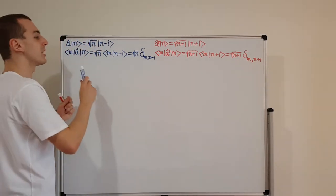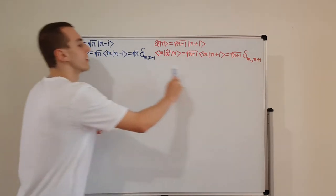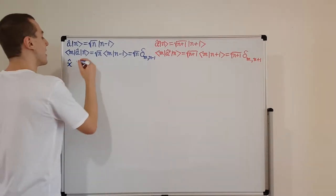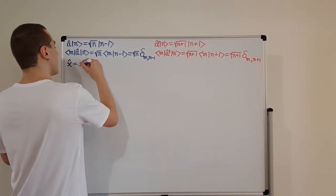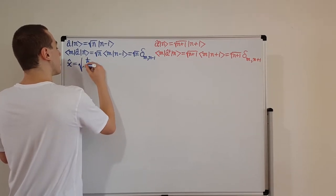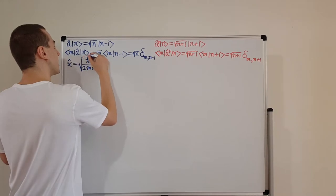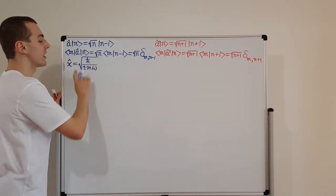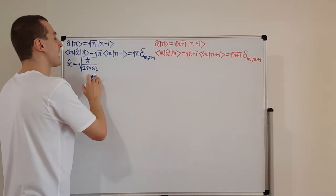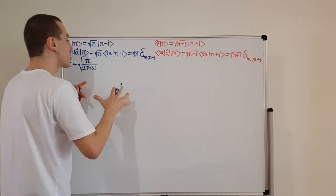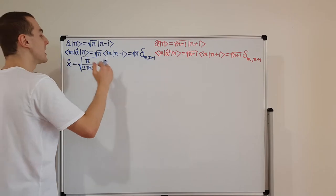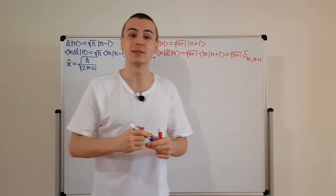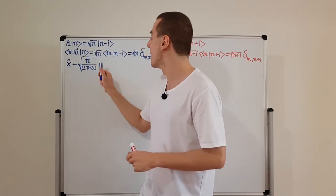Now I'll write down the important relationships we're going to use to construct the position and momentum matrices. The position operator x-hat equals a normalization constant — the square root of ℏ over 2mω — multiplied by the sum of a-dagger and a. There's a derivation in the quantum mechanics playlist for this coefficient. These normalization constants are incredibly important because they allow us to predict physical values with correct units, such as m, ω, and ℏ.